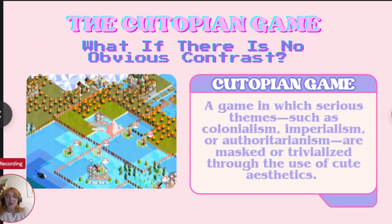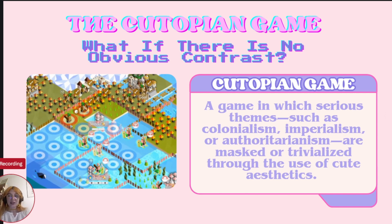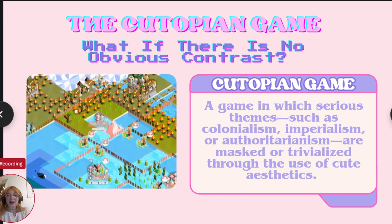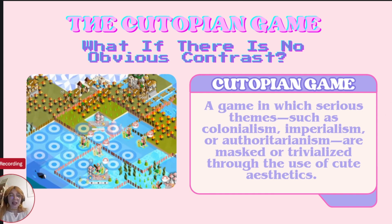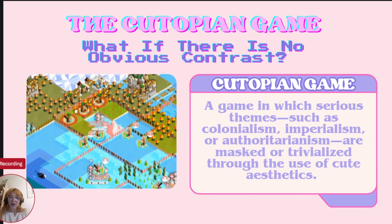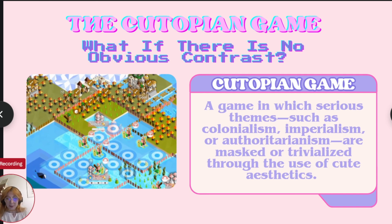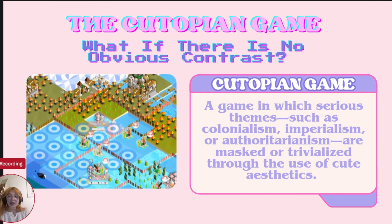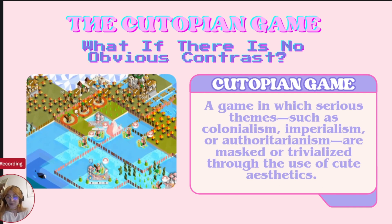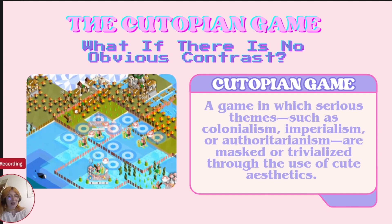What happens when a game doesn't use an obvious contrast between the cute and the serious? What if the entire game world, narrative, and aesthetic are cutified to the point that the serious themes themselves become hidden? I propose the term 'cutopian game' to describe games in which serious themes such as colonialism, imperialism, or authoritarianism are trivialized through the use of cute aesthetics. In these games, the cutification of the world is so thorough that it glosses over the gravity of the real-world issues they depict.